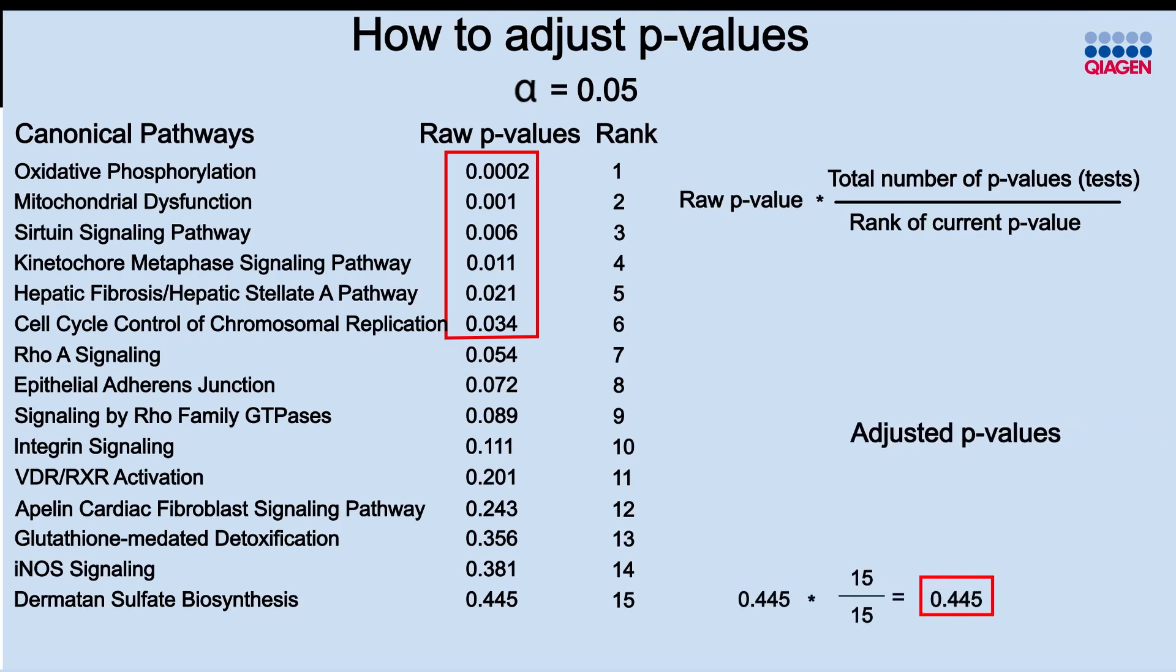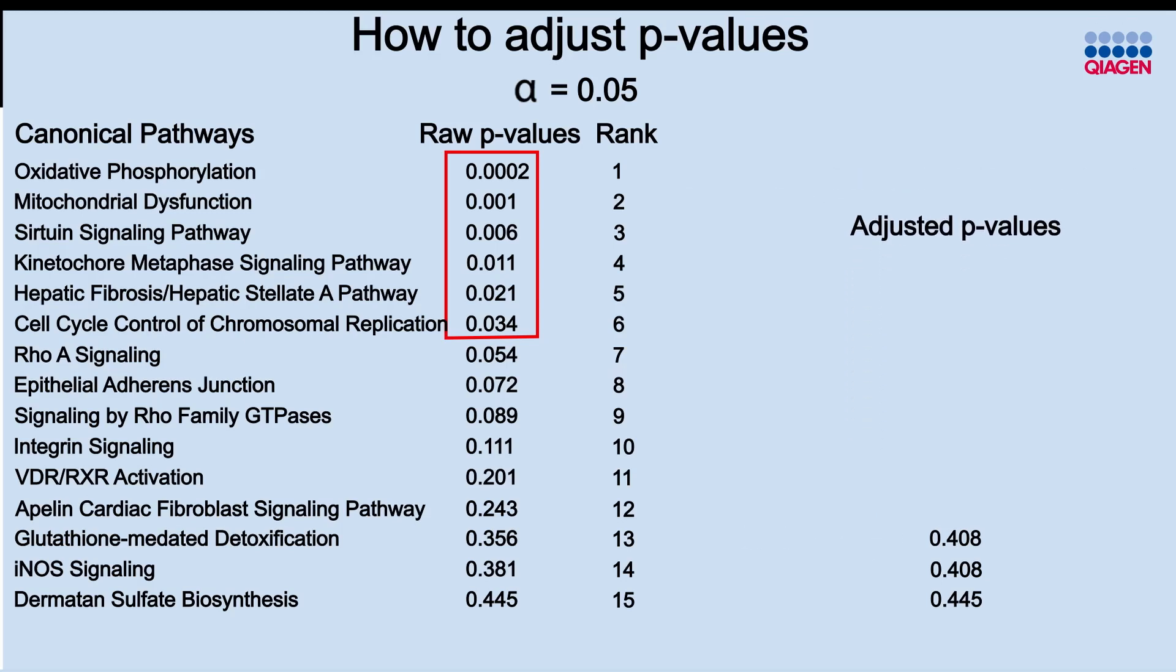The largest p-value will always be the same as the raw, unadjusted p-value when applying this equation. You then move up the list by performing the calculation for the next p-value, and compare the new adjusted p-value with the one below it. So here, the p-value with a rank of 14 has an adjusted p-value of 0.408. We check and see if that p-value is smaller than the p-value right below it, the one with the rank of 15. If it's smaller, we keep that newly adjusted p-value. If it's larger, we take the adjusted p-value below it. We repeat this calculation for each p-value, moving up the list. You can see that when we adjust the next p-value, we find that it is larger than the adjusted p-value below it. Therefore, we use the adjusted p-value from the 14th pathway instead. We apply this equation to the remaining p-values, and these are now the adjusted p-values for all the pathways.